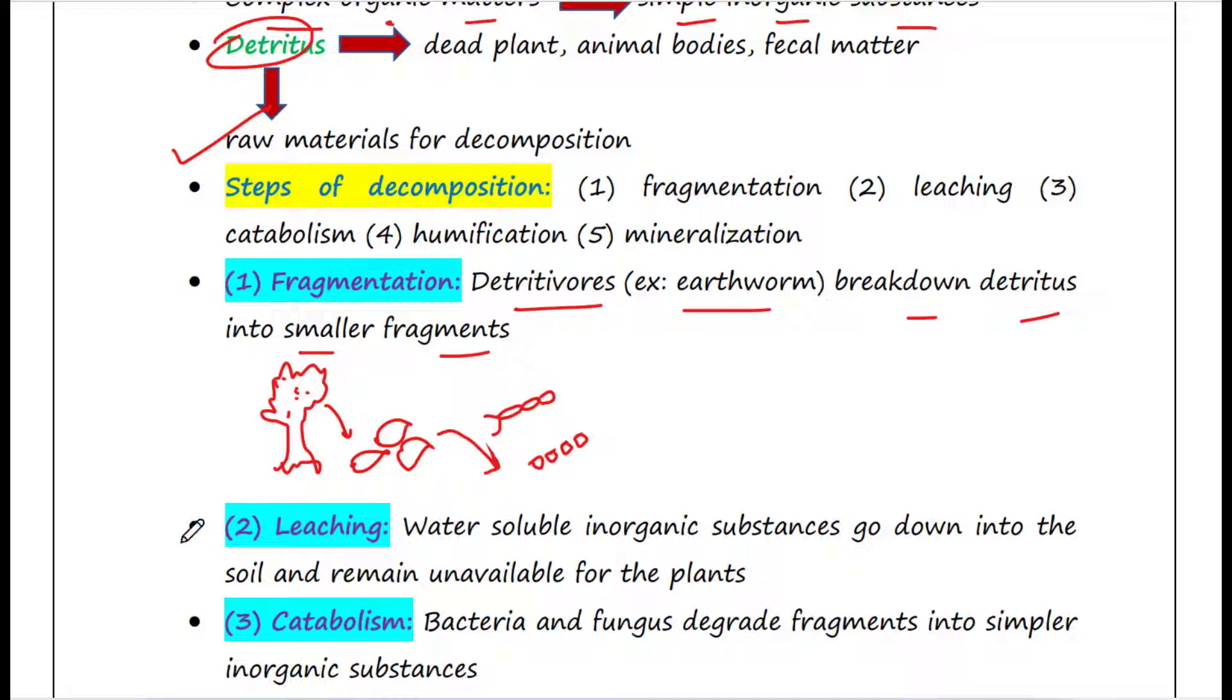Next step is leaching. Water soluble inorganic substances go down into the soil and remain unavailable for the plants. So after the fragmentation process, some water soluble inorganic substances will come out. But these substances will go down into the soil and plants actually cannot absorb them because they will be lost. This is called leaching.